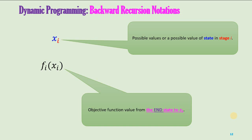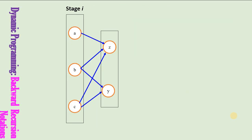Let us practice these notations by an example. Say we are at stage i problem. In backward recursion, the two stages that constitute the stage i problem are stage i and stage i minus 1.